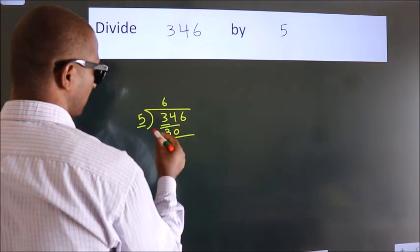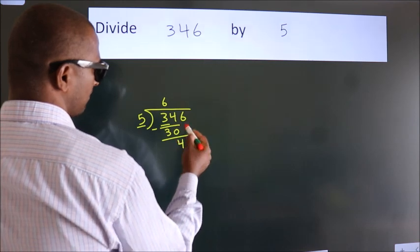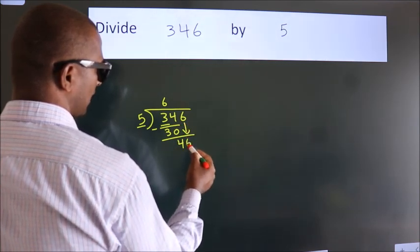Now we should subtract. We get 4. After this, bring down the next number, so 6 comes down.